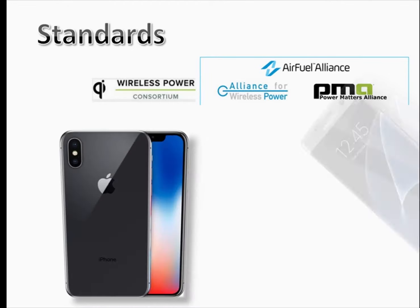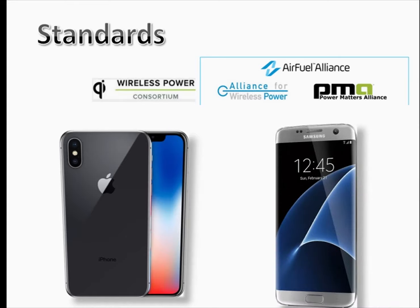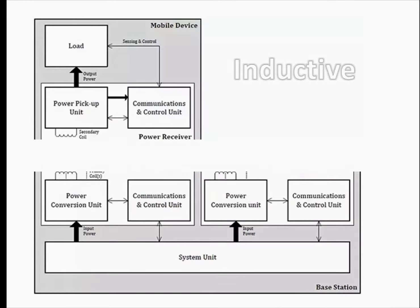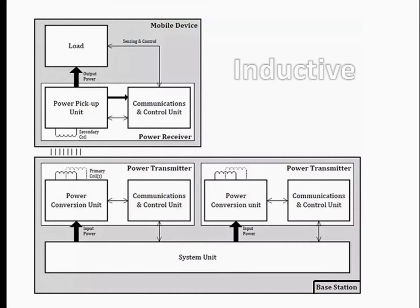Apple uses only Qi in iPhones while other phones may use both. The technology used by WPC is inductive while Alliance for Wireless Power uses resonant as well. Let us switch to inductive and resonant. Inductive is what we were discussing till now, where base station is the charger and the mobile is the receiver.